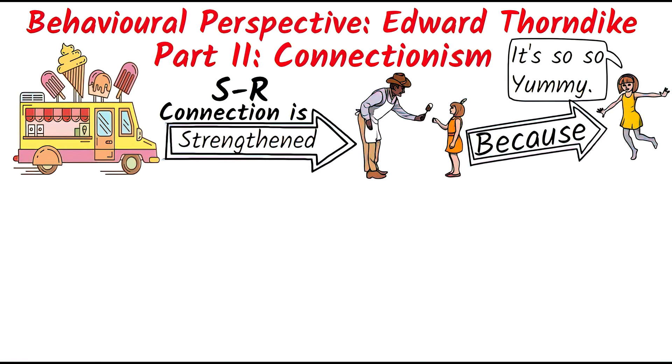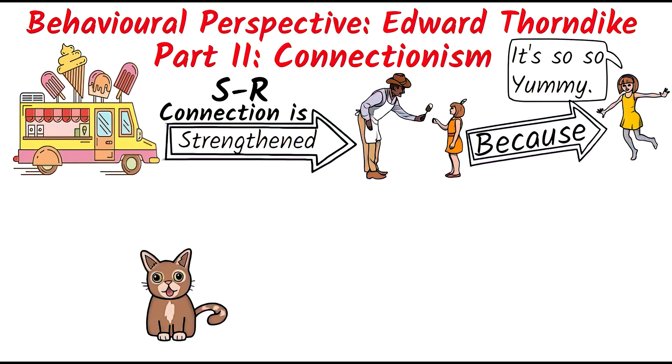Thorndike originally wanted to study the learning process in humans, but because of a lack of subjects or volunteers, he turned to animals like cats.